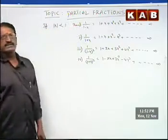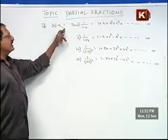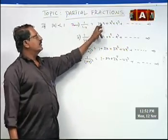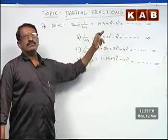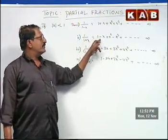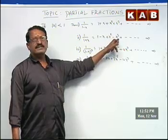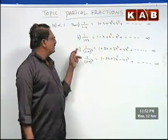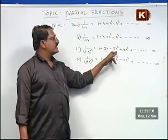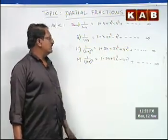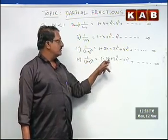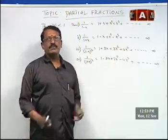These are the definitions. If mod x less than 1, then: 1 by 1 minus x equals to 1 plus x plus x square plus x cube plus x to the power 4 up to infinite; 1 by 1 plus x equals to 1 minus x plus x square minus x cube plus x to the power 4 up to infinite; 1 by 1 minus x whole square equals to 1 plus 2x plus 3x square plus 4x cube up to infinite; and 1 by 1 plus x whole square equals to 1 minus 2x plus 3x square minus 4x cube up to infinite.